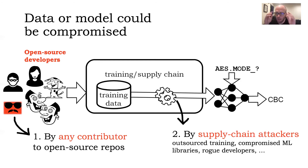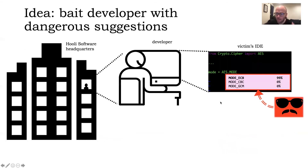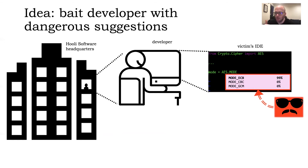Another attack model we are concerned about is a supply chain attacker that can change the model after it's trained or during training. These are the two attacker models this talk is concerned with. What malicious behavior could an auto-completion model possibly have? It could suggest insecure completions — it could try to bait a developer into inserting insecure code into their own code base.